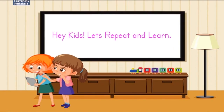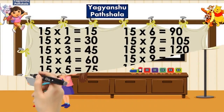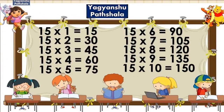Hey Kids! Let's repeat and learn. 15 × 1 = 15. 15 × 2 = 30. 15 × 3 = 45. 15 × 4 = 60. 15 × 5 = 75. 15 × 6 = 90. 15 × 7 = 105. 15 × 8 = 120. 15 × 9 = 135. 15 × 10 = 150.